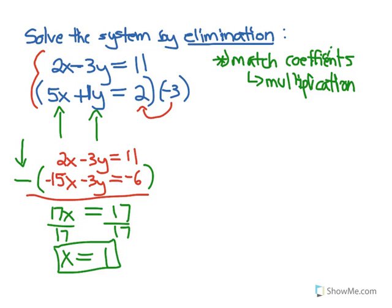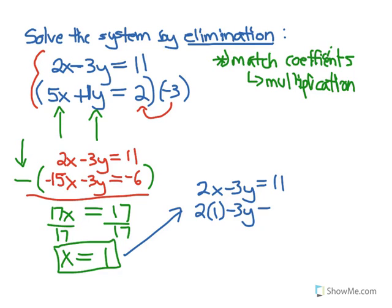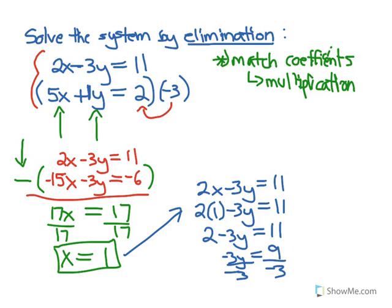So we've found our x coordinate. Now plug it back into the first equation: 2x minus 3y equals 11, with x equals 1, becomes 2 times 1 minus 3y equals 11, so 2 minus 3y equals 11. Subtract 2 from both sides: negative 3y equals 9. Divide by negative 3: y equals negative 3.